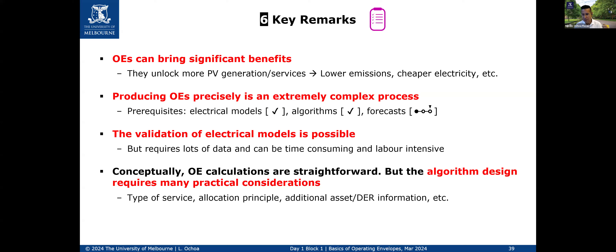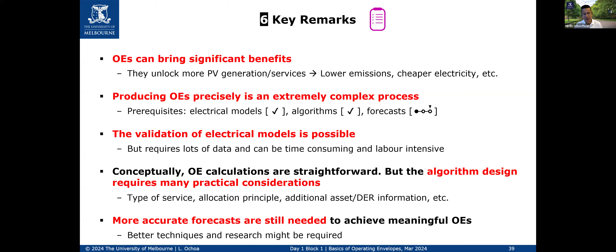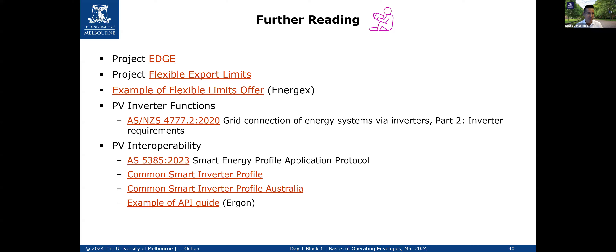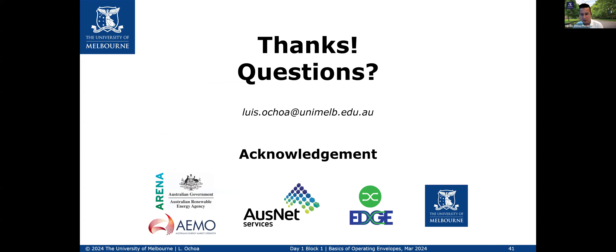There are many practical considerations — different network types, three-phase vs single-phase customers, reactive power aspects. Forecasts still need more effort. There are multiple relevant links: Project Edge, flexible export limits from SAPAN, what EnergyX is offering, PV inverter functions in Australian standards, and interoperability aspects such as CSIP Australia — the Common Smart Inverter Profile — which is very important for interoperability. With that I thank the University of Melbourne, ARENA, AEMO, Ausnet, and all the people who worked on this.